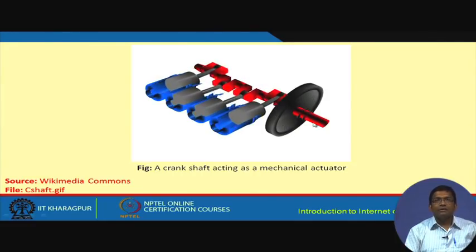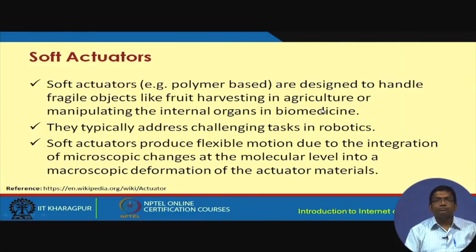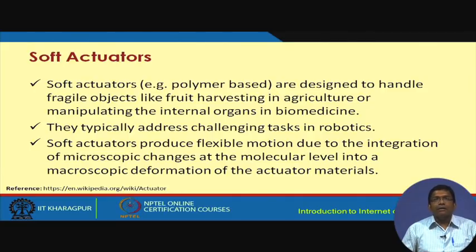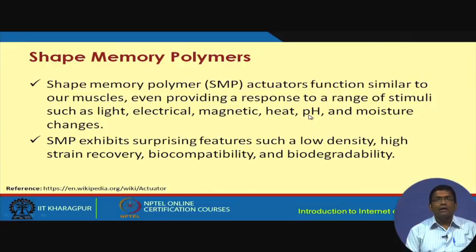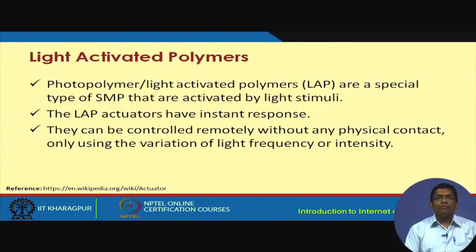There are also soft actuators, which are polymer-based and designed to handle fragile objects, such as in fruit harvesting in agriculture or handling internal organs in biomedicine. They are quite popular in robotics. Soft actuators use shape memory polymers (SMPs) — the behavior of these polymers changes depending on stimuli such as light, electrical signals, magnetic signals, heat, and pH.